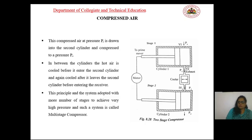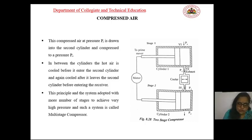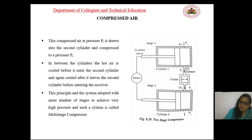The compressed air at pressure P1 is drawn into the second cylinder and compressed to pressure P2. In between the cylinders, the hot air is cooled before entering the second cylinder, because as pressure increases, temperature also increases and could damage parts. This working principle can be extended to more stages to achieve very high pressures — such a system is called a multistage air compressor.